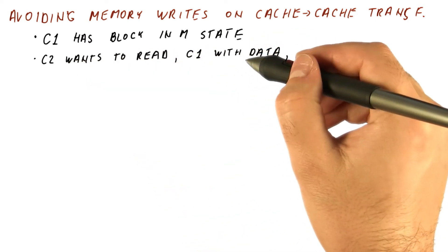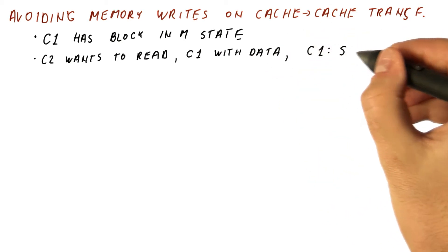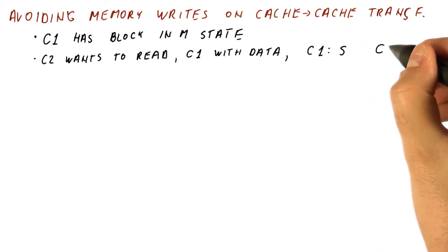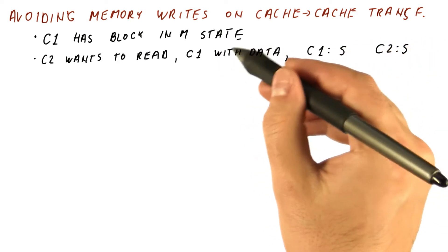But C1 can no longer just write to this block. So C1 gets the block in the shared state, C2 gets the block in the shared state, and that's why the memory had to grab the data when C1 was responding.